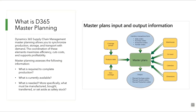It has all the setups related to the coverage group, the items and the reorder quantity, which is in line with the warehouses, the on-hand stock, the working calendars and the dimensions. Put together in transactions such as sales orders, purchase orders, production orders and transfer orders, the master planning module gives you an output in terms of planned purchase orders, planned transfer orders and planned production orders.